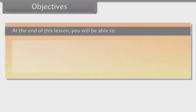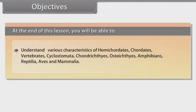Objectives. At the end of this lesson, you will be able to understand various characteristics of Hemichordates, Chordates, Vertebrates, Cyclostomata, Chondrichthyes, Osteichthyes, Amphibians, Reptilia, Aves and Mammalia.